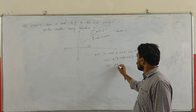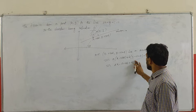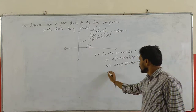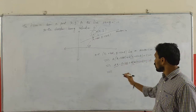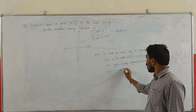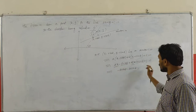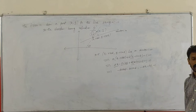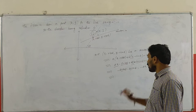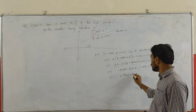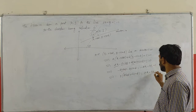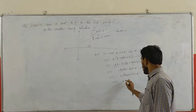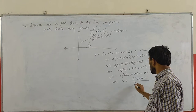This implies: Ax1 − Ar cosθ + By1 − Br sinθ + C = 0. Taking minus common from the r terms on the left side, the minus signs cancel. Taking r common: r(A cosθ + B sinθ) = Ax1 + By1 + C. So r equals (Ax1 + By1 + C) / (A cosθ + B sinθ).